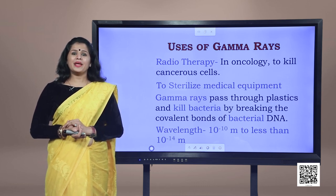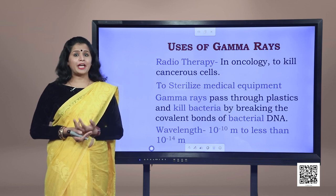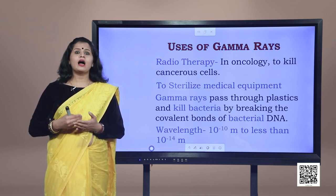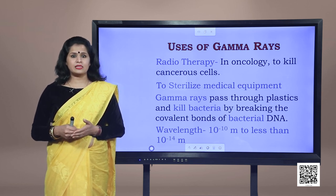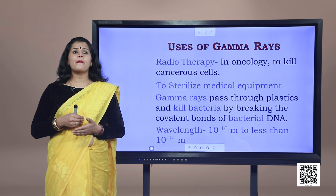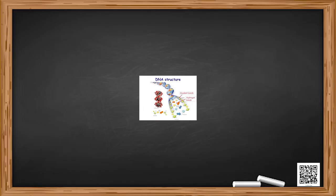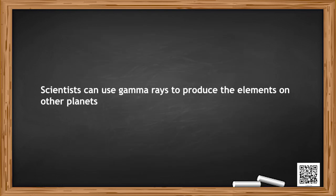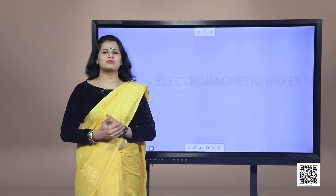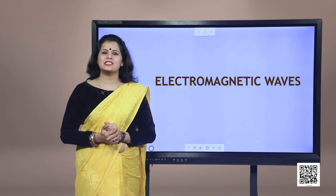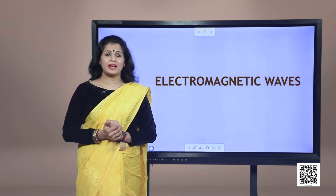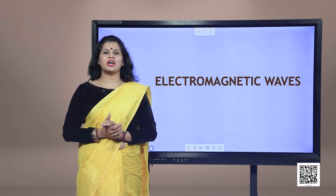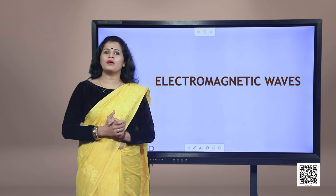Gamma rays are used mainly in the medical field for radiotherapy. In oncology, gamma rays are used to kill cancerous cells. They are also used to sterilize medical equipment. Gamma rays pass through plastics and kill bacteria by breaking the covalent bonds of bacterial DNA. Scientists can also use gamma rays to probe elements on other planets. With this, we have come to the end of this program, having discussed the various components of the electromagnetic spectrum in detail. Viewers should try to look for more facts about EM waves.